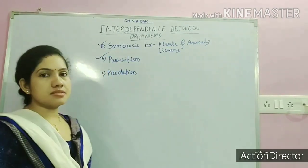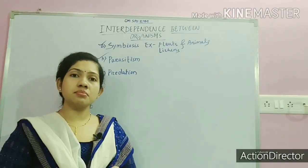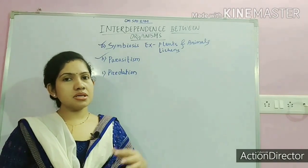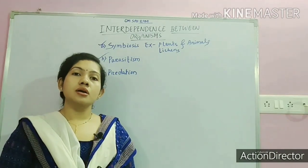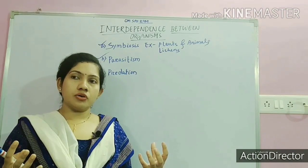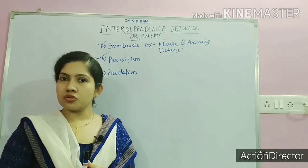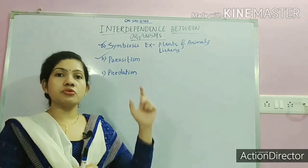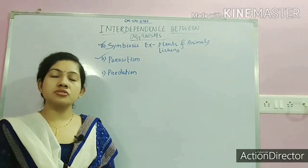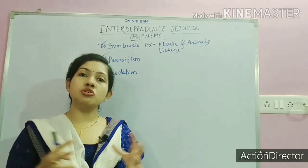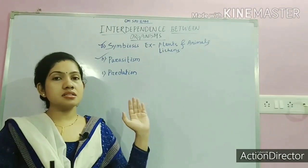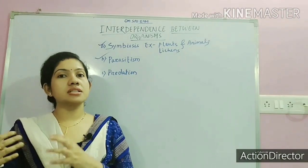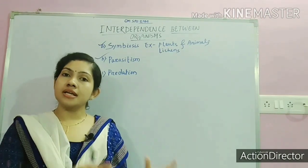Next, we talk about parasitism. A parasite means something which will harm. Parasitism is a process in which, when two organisms interact, one organism hampers the other. It is just opposite to the symbiotic relationship — in symbiosis both are mutually beneficial, but in parasitism one organism hampers the growth of the other for its own survival.